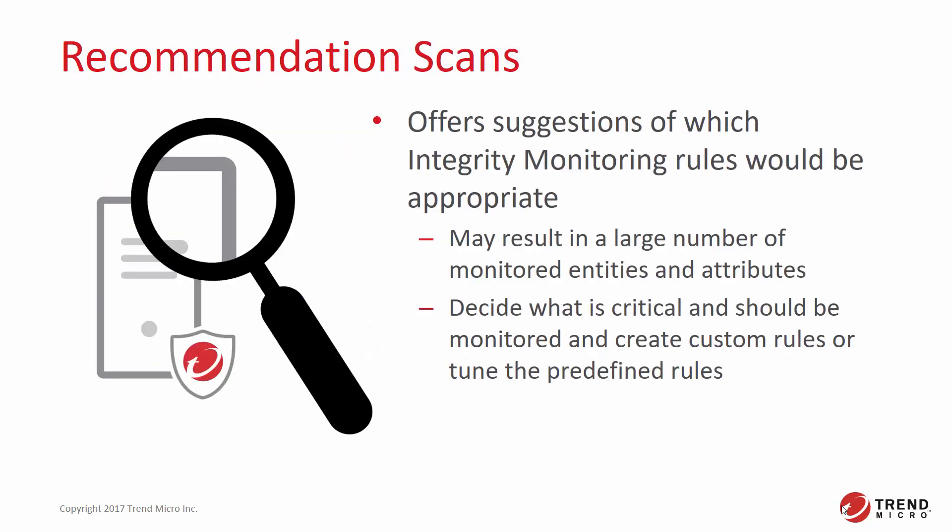Like other Protection Modules in Deep Security, the Integrity Monitoring Protection Module uses rules to monitor selected objects. One way to determine which rules are appropriate for your system is to run a recommendation scan. When you run a recommendation scan on a protected server, it will identify all objects that could potentially be monitored. If you automatically apply these rules, you could end up with a large number of monitored entities and attributes, which may generate a large amount of event information. It is important to decide what information is critical and which information you'll have the ability to monitor regularly. If the default rules do not provide the necessary details, you could create custom rules or tune the predefined rules for your own requirements.